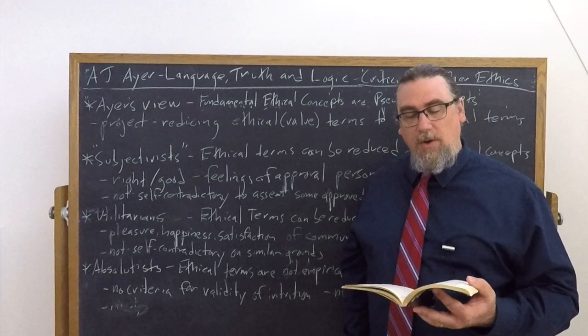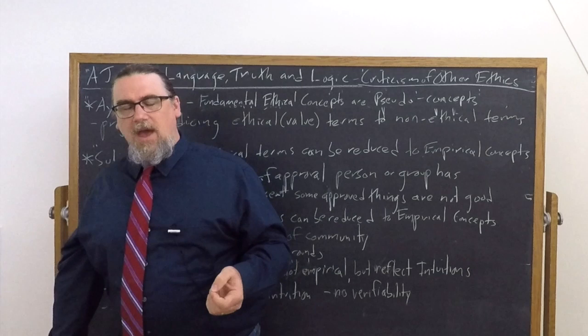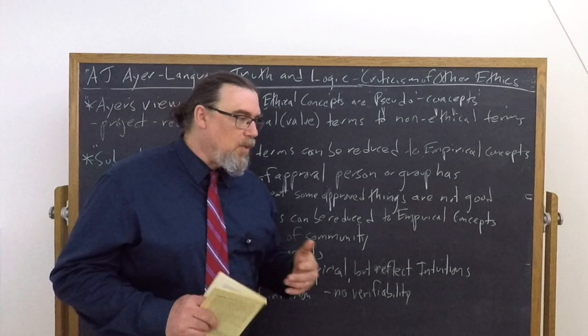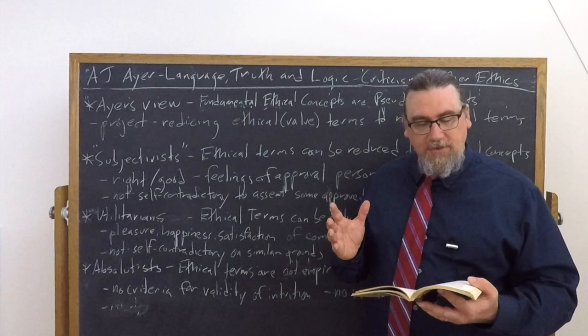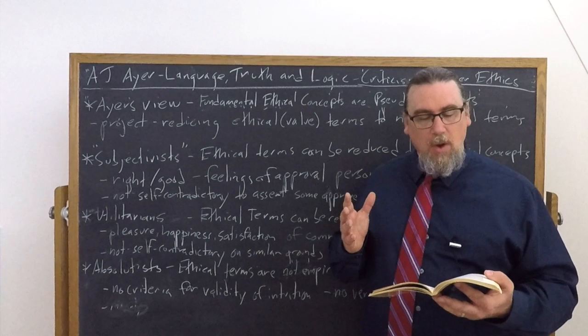So let's start with the subjectivists first. The subjectivists are saying that ethical terms like right and good can, in fact, be translated into empirical concepts or statements. And what would they be translating them into? He tells us that the rightness of actions and the goodness of ends can be translated for the subjectivist into terms of the feelings of approval, which a certain person or group of people has towards them.